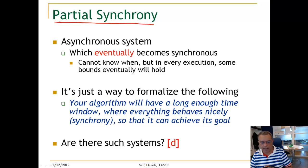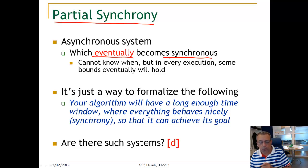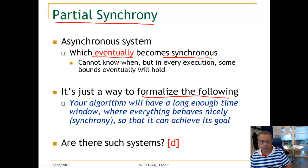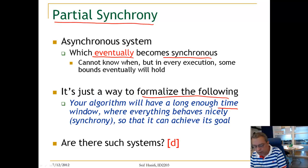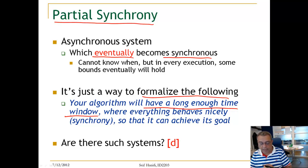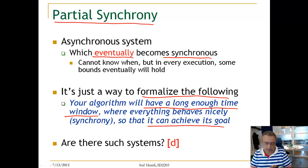Partial synchrony is an asynchronous system which eventually becomes synchronous, but we cannot know when. In every execution, there is some bound that will eventually hold, though we don't know this bound. Another way to formalize this: your algorithm will behave as if there is a long enough time window where everything behaves nicely, so that the algorithm can achieve its goals. Initially we don't know when, but this time window will come, and in it the algorithm can terminate or come to an agreement.